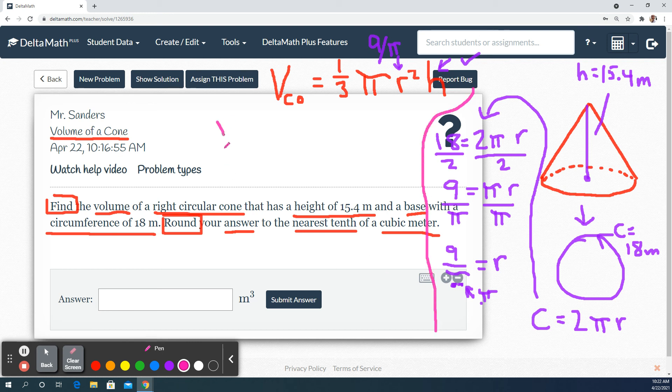So now we have volume is equal to one third pi. And then our radius is nine over pi, all of that gets squared, and then our height is 15.4. This now becomes what do we do first in this order of operations would be to square this first.